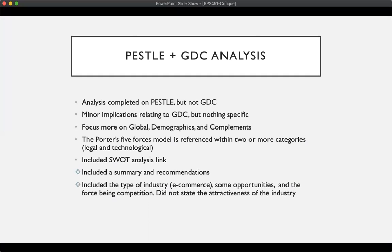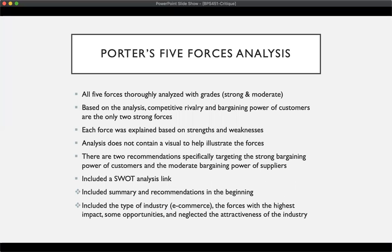There was not the attractiveness of the industry. For the Porter's Five Forces analysis, all five forces were analyzed, and there were gradings of strong and moderate. The analysis showed that the two strongest forces were competitive rivalry and the bargaining power of customers. Each force was explained based on their strengths and weaknesses, with the other three all being moderate.